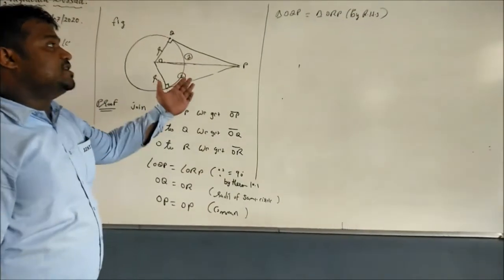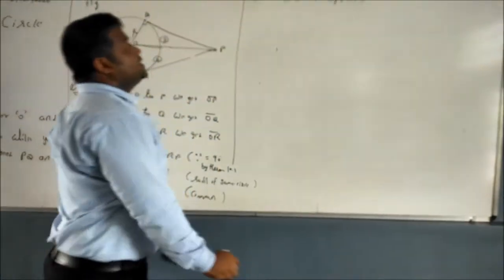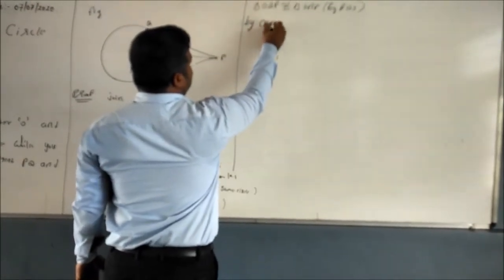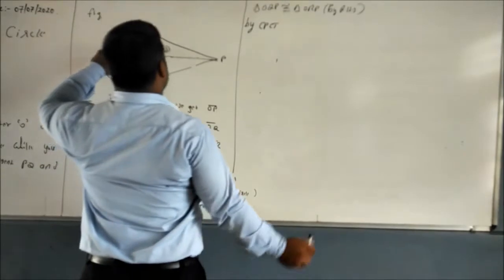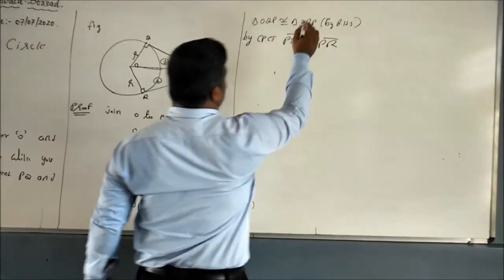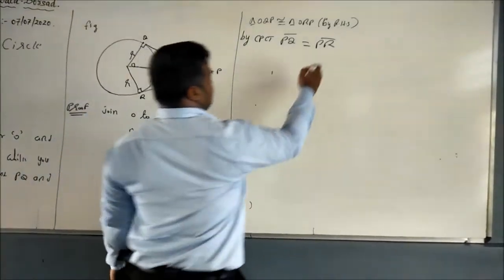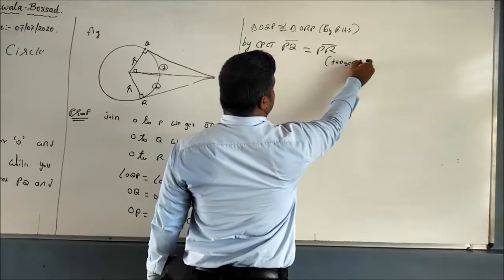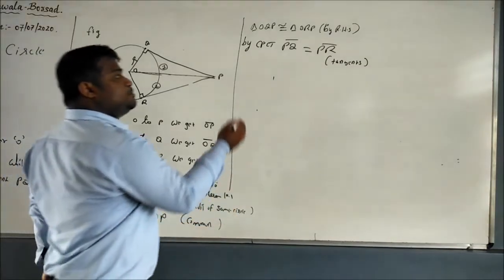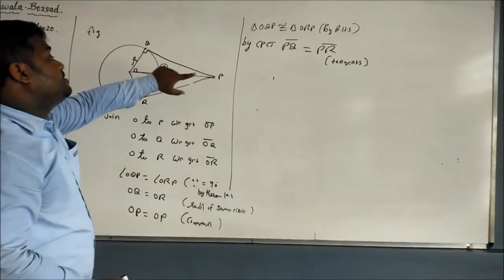By RHS congruency of the two triangles, by CPCT (corresponding parts of congruent triangles), we get PQ = PR. Therefore, the two tangents PQ and PR are equal in length. Hence proved — the lengths of tangents drawn from an external point to a circle are equal.